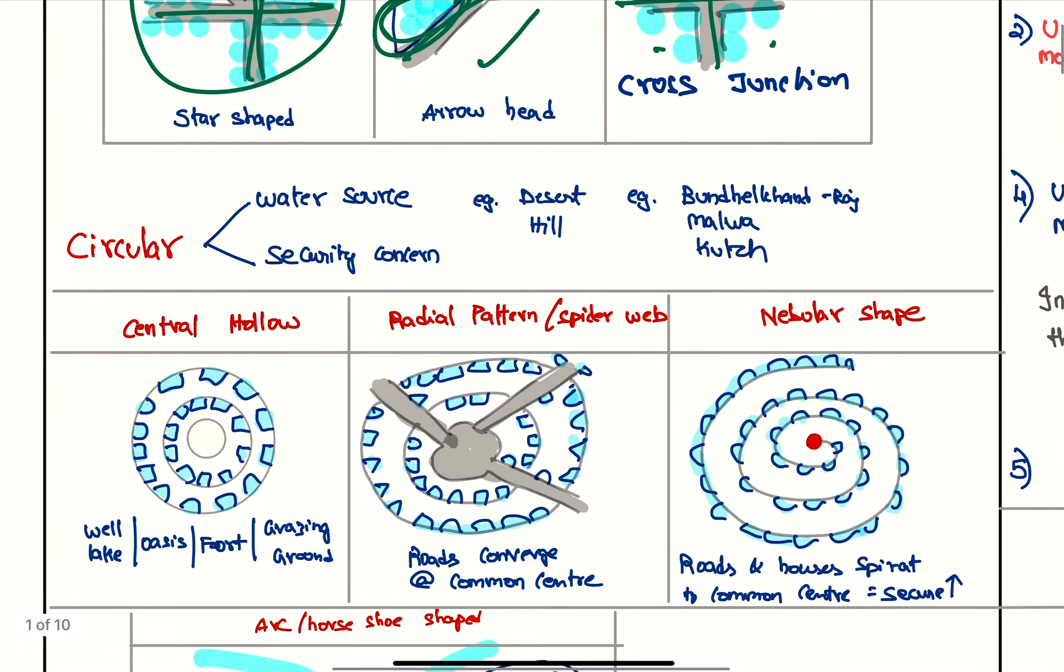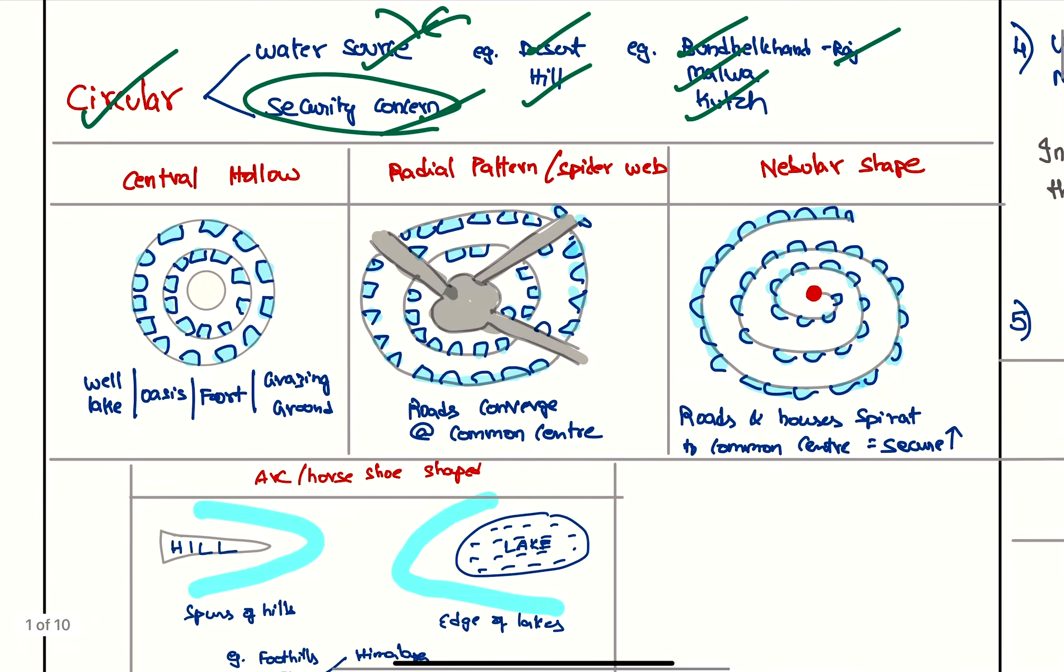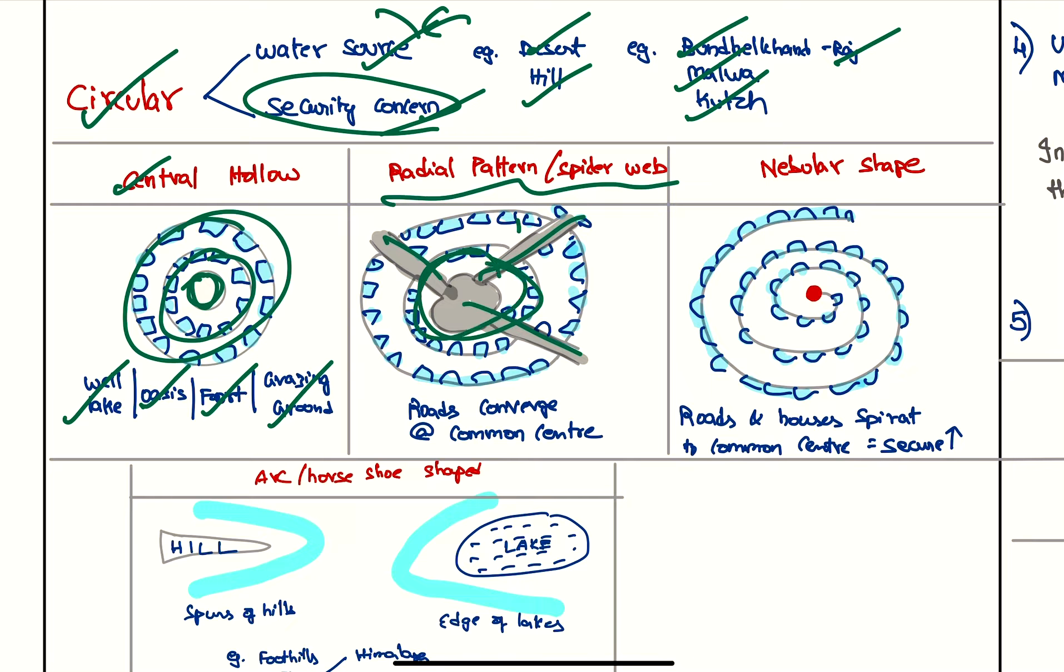Next, the circular. It is seen when there is congregation towards a water source or for security concerns, for example oasis in deserts or for security purposes in hills because of tribal conflicts. This can be seen in Bundelkhand, Rajasthan region, Malwa, Kutch, etc. The variants are: first, central hollow around the well—the settlements are seen like this, so the central area would be a well or a lake or oasis, a fort, or a grazing land. If the roads converge also, radial pattern or spider web pattern can be seen.